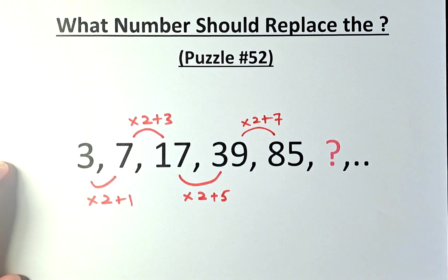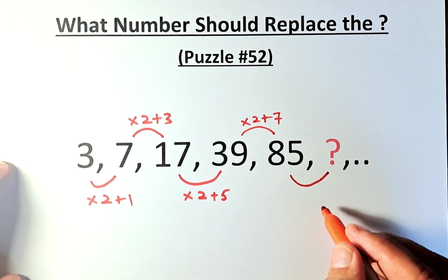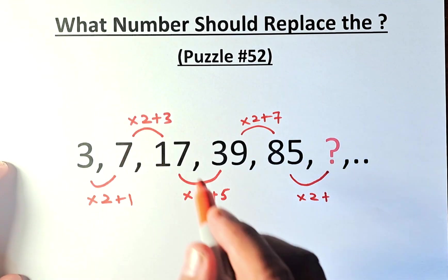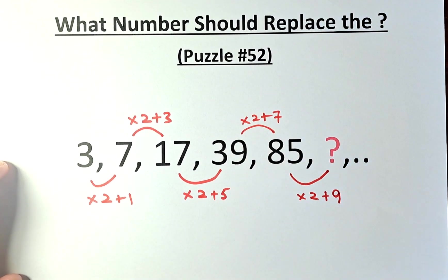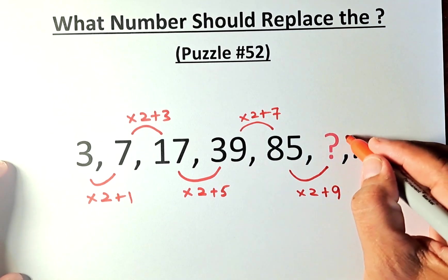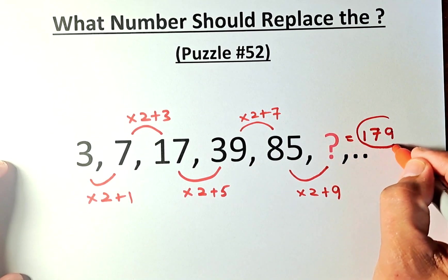And last but not least, from 85 to the question mark, we're going to do the same thing. We multiply by 2 and then add 1, 3, 5, 7, so this must be 9. 85 times 2 is 170. 170 plus 9, and the question mark is 179. As I said before...